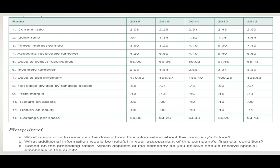We're going to look at 12 ratios — we're not going to look at all of them, but a few that require further investigation, and we're going to make some conclusions. We are given current ratio, quick ratio, times interest earned, inventory turnover, and so on. We have data from 2012 to 2016, five years worth of data. The more years you have, the better off you are.